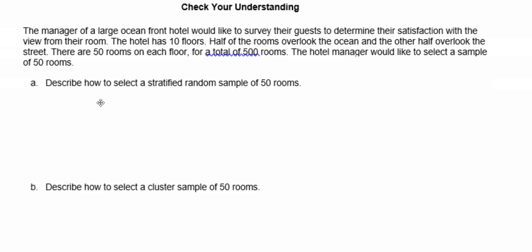We're going to talk one more time about how to use a stratified sample, a cluster sample, and a systematic sample. Here is another example: a large oceanfront hotel would like to survey its guests to determine their satisfaction with the view from their room. The hotel has ten floors, half the rooms overlook the ocean and the other half overlook the street, with 50 rooms on each floor for a total of 500 rooms. The hotel manager would like to select a sample of 50 rooms.